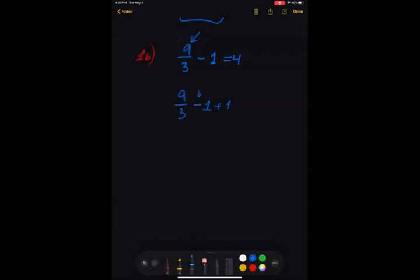Opposite of subtraction is addition. So then plus 1 equals to 4. If we have added a number to the left, we also have to add it to the right. So 4 plus 1. So minus 1 plus 1 is 0. So then we have only a divided by 3 left on the left side, equal to 5.